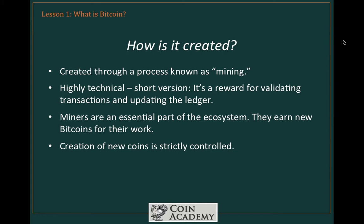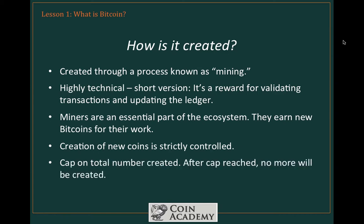Bitcoin creation is strictly controlled. Unlike a national fiat currency, where the government may authorize printing of new notes at any time — diluting the value of the monetary supply — this can never happen with Bitcoin. Bitcoin creation is controlled by algorithms relating to the underlying structure of Bitcoin. We know how many Bitcoins are in existence at any moment, when the next Bitcoins will be created (about every 10 minutes), and exactly how many will be created in total. There's a cap on the total number, and after that cap is reached, no more will be created. This means Bitcoin is largely isolated from inflationary currency factors.